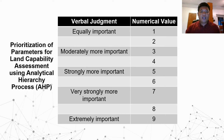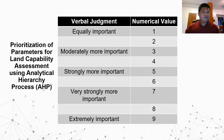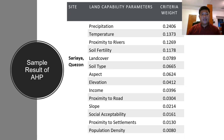Since the five variables differ in each study site, one AHP session was conducted per project site. Using pairwise comparison, the degree of importance of one indicator over another was determined on a scale where a score of 9 means extremely important and a score of 1 means equally important. A sample result from Sarayaya, Quezon shows that precipitation obtained the highest weight while population density gained the lowest weight.